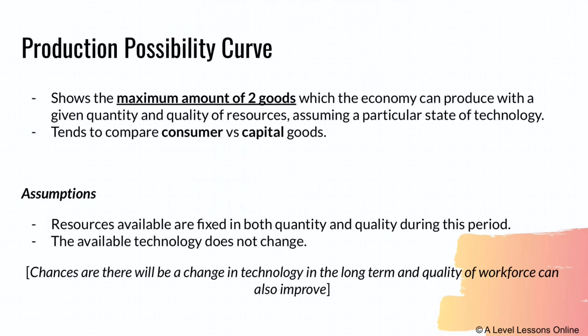Next, we move on to the Production Possibility Curve, otherwise known as the PPC. The PPC basically shows the maximum amount of two goods which an economy can produce with a given quantity and quality of resources, assuming a particular state of technology — meaning technology is constant with no change, improvement, or slowdown.